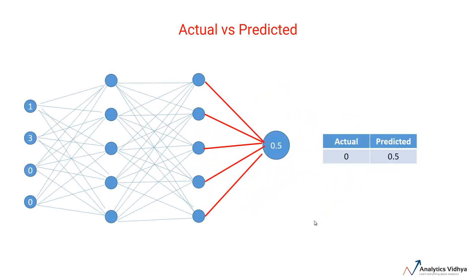These calculations for the first row features is 0.5, so the predicted value becomes 0.5 against the actual value of 0.